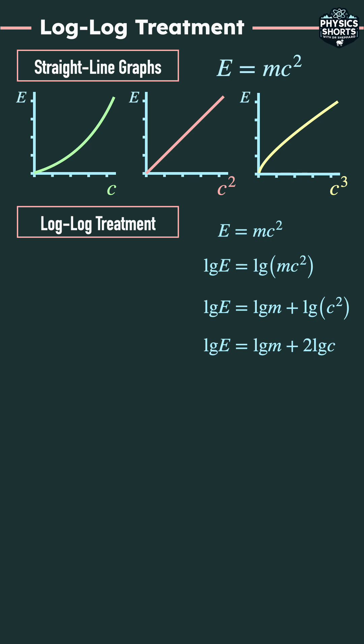If we plot log E against log C, it will be a straight line with gradient two and Y intercept log M.